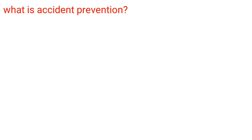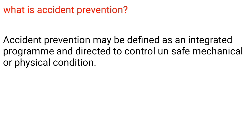What is accident prevention? Accident prevention may be defined as an integrated program directed to control unsafe mechanical or physical conditions.